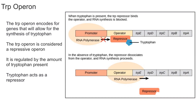In this video I'm going to explain what the trp operon is and how it works. In a previous video I explained what the lac operon is, which had to do with lactose. The trp operon has to do with the amino acid tryptophan. It is found in E. coli and some other bacteria, and importantly, tryptophan is needed for organisms to survive. Organisms can synthesize tryptophan if it's not in the environment, and so the trp operon encodes for genes that allow for the synthesis of tryptophan.